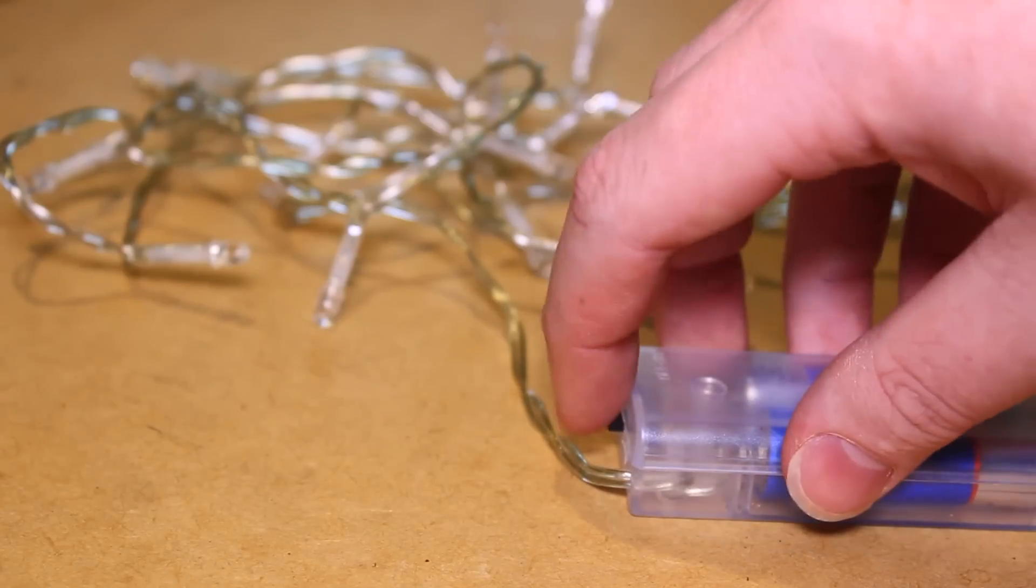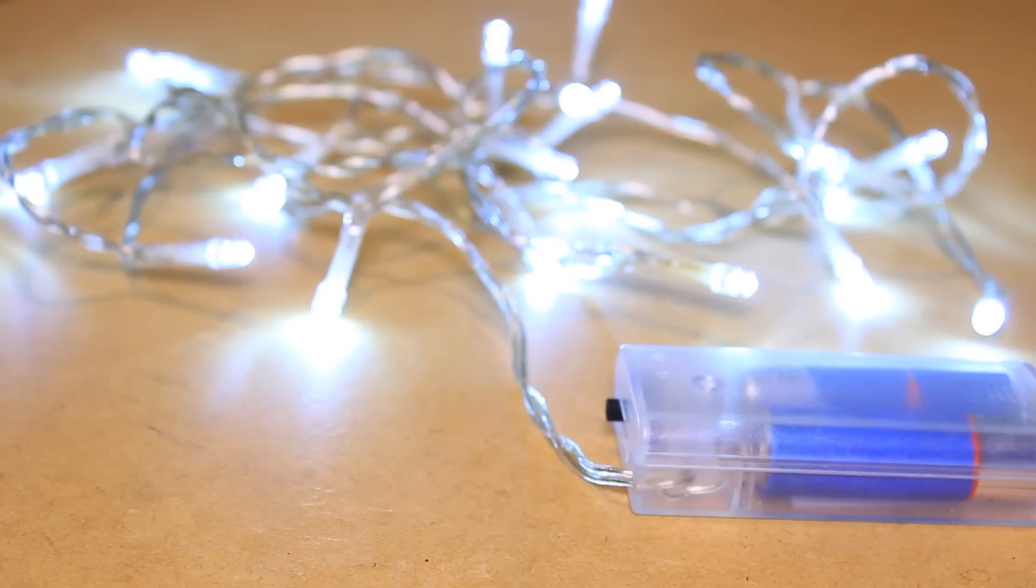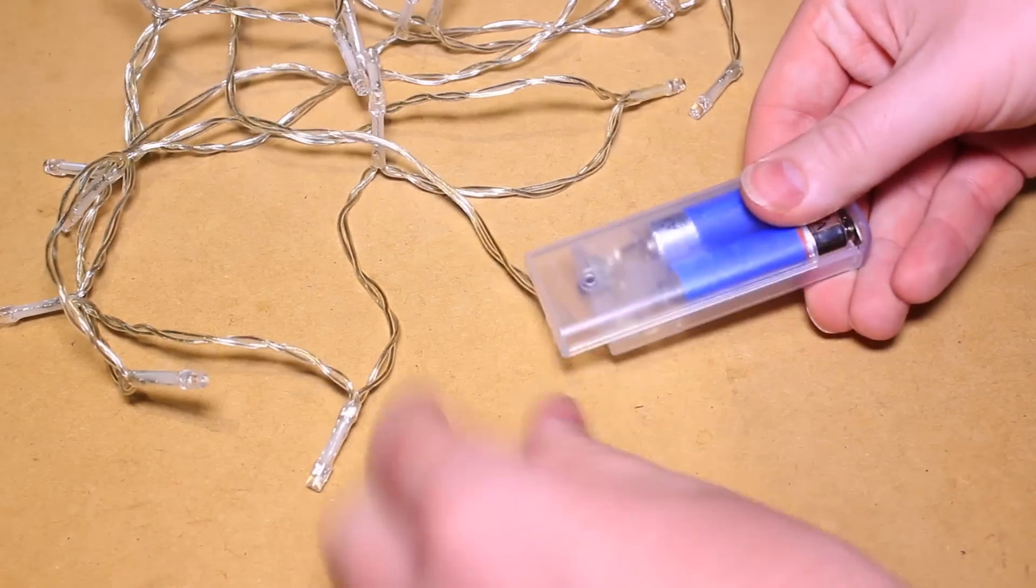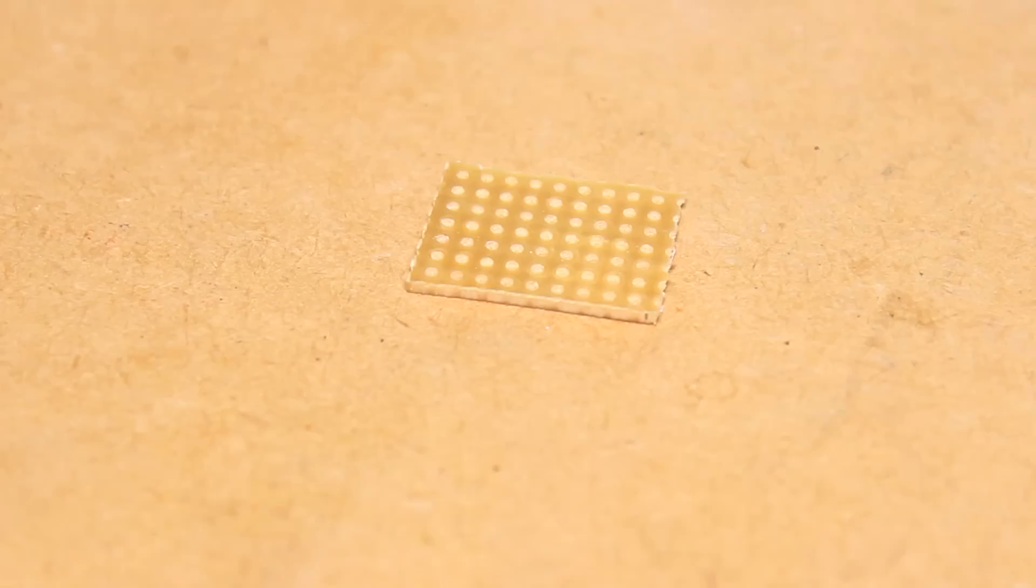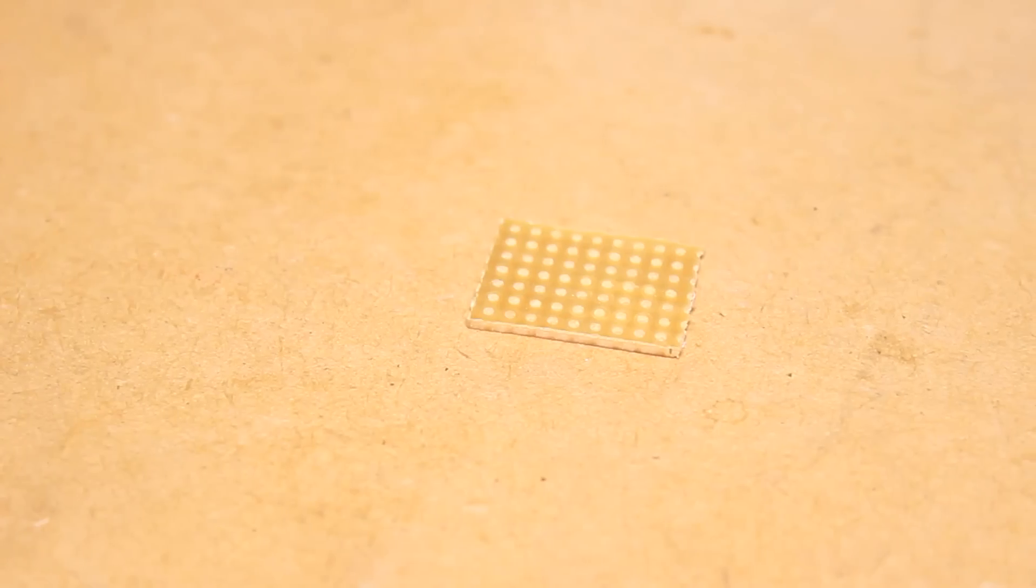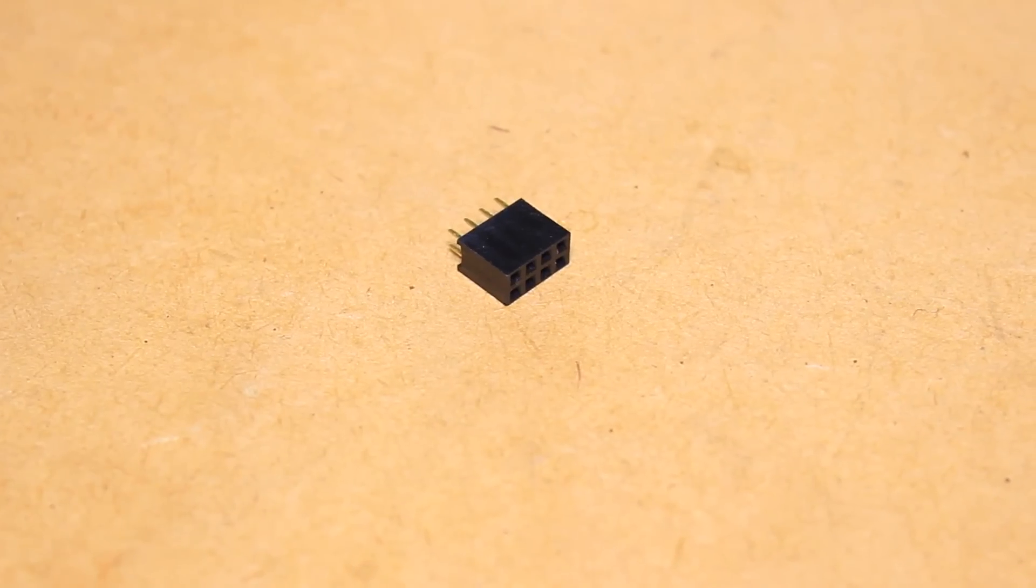For this project you'll need a set of battery powered Christmas lights. This set is powered by two AA batteries providing 3 volts for both the LEDs and ESP module. You'll also need a piece of strip board to assemble the circuit on and a 2x4 header pin socket.